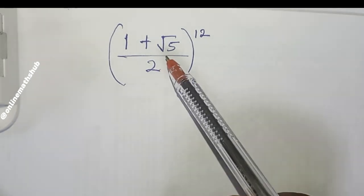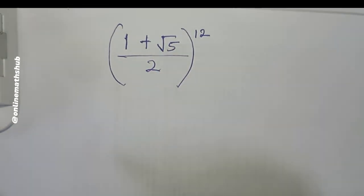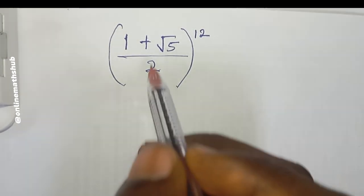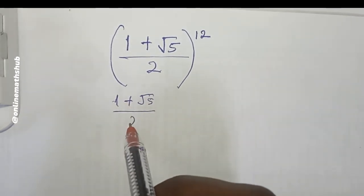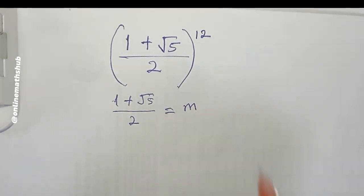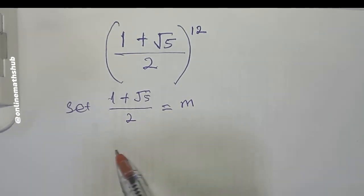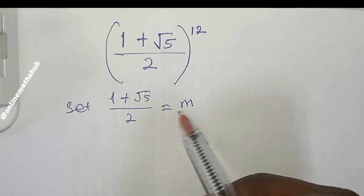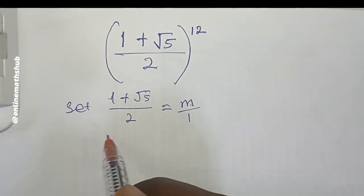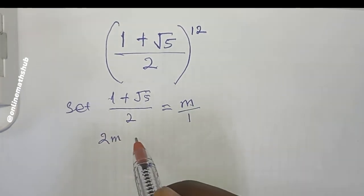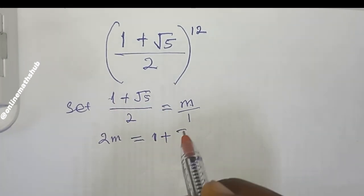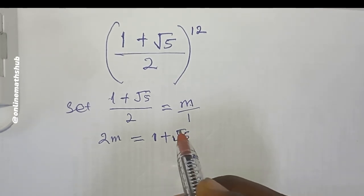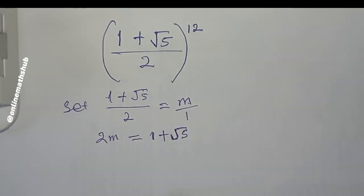The first thing I'm going to do is set the expression inside the brackets to a variable so we can begin to simplify. Let me set (1 + √5) / 2 equal to m. If that is the case, we can multiply through: 2 times m gives 2m, equal to 1 plus √5.